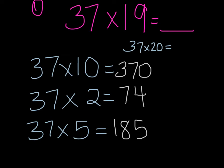The last one is 37 times 20. This is why they're called cluster problems — I can use another problem to help me solve this one. I know 37 times 10 is 370. Doubling 10 gives me 20, and doubling that answer gives me what I need. So 37 times 20 is 740.